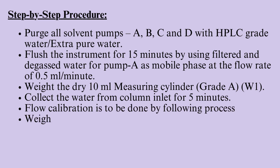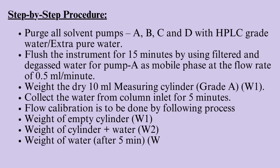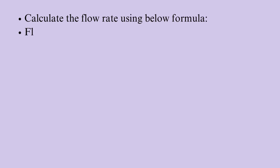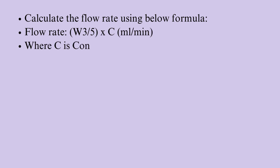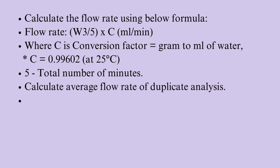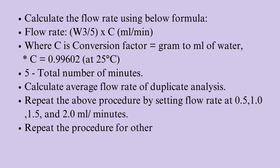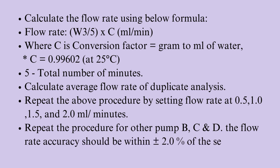Flow calibration process: weight of empty cylinder W1, weight of cylinder with water W2, weight of water after 5 minutes W3 equals W2 minus W1. Calculate the flow rate using the formula: flow rate = W3 / 5 × C ml/min, where C is the conversion factor (grams to ml of water), C = 0.99602 at 25°C, and 5 is the total number of minutes. Calculate the average flow rate of duplicate analysis. Repeat the procedure at flow rates of 0.5, 1.0, 1.5, and 2.0 ml/min. Repeat for pumps B, C, and D. The flow rate accuracy should be within ±2% of the set flow rate.